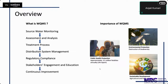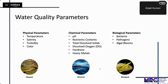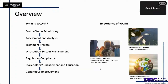Now let's understand why it is important. According to a UN report, approximately 3.5 million fatalities occur annually due to poor water quality. Additionally, a lot of biodiversity destruction is happening due to poor water quality. The third and most important reason is sustainable development, which helps in agricultural and economic growth.